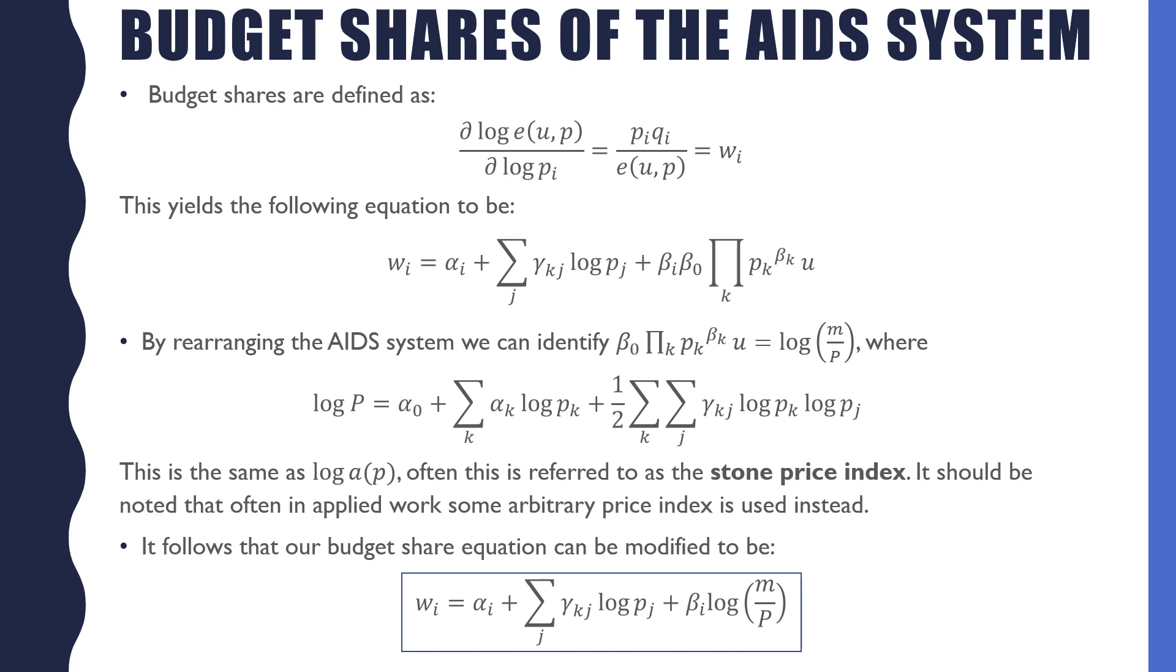And it follows that our budget share equation can be modified to be w_i equals alpha_i plus the summation of gamma_kj times log of p_j plus beta_i times this indexed term, log of m over P.